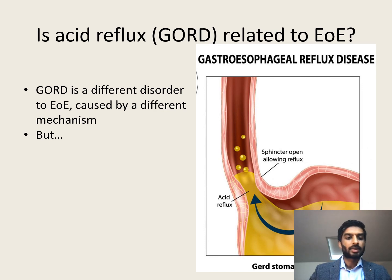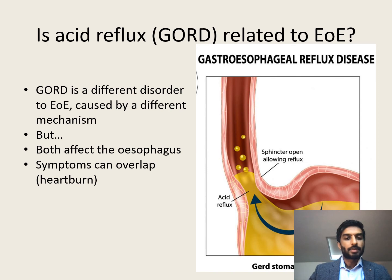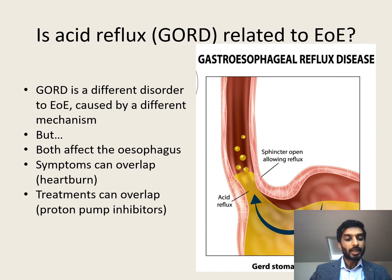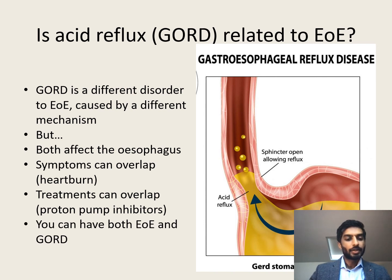However, there are several overlapping features of the two conditions. Firstly, they both affect the esophagus. The symptoms can overlap — in particular, heartburn or burning behind the breast bone can be felt in both acid reflux and EOE. The treatments can overlap too: proton pump inhibitors were actually initially developed for the treatment of acid reflux and are still the most common medication used for it. And while they are two different conditions, EOE and GORD can coexist within the same patient. This can sometimes cause difficulties in diagnosis, but an experienced esophageal physician should be able to discriminate between the two and treat you appropriately.